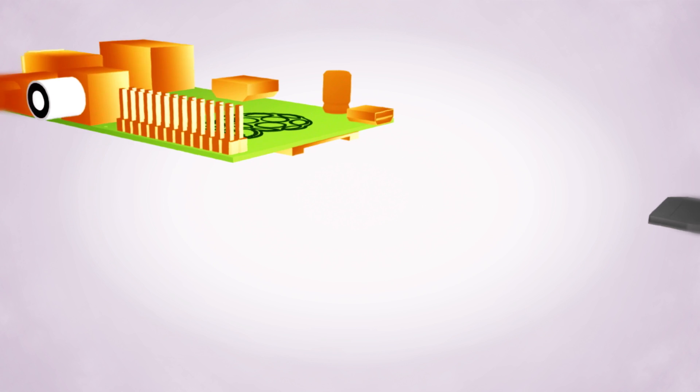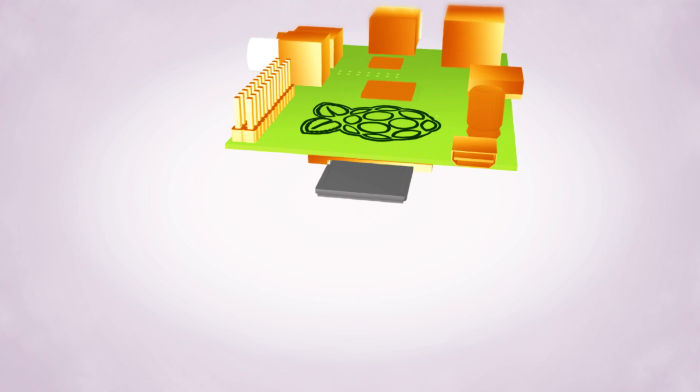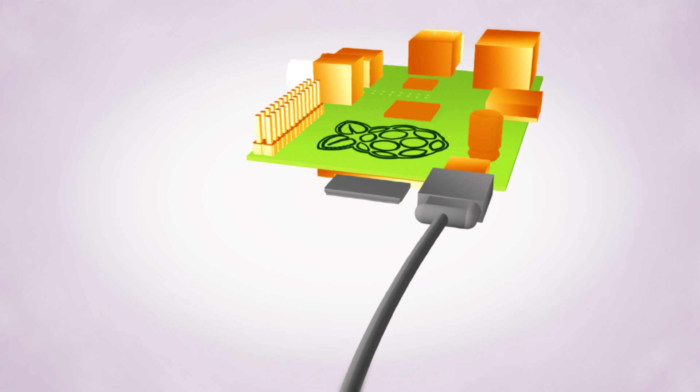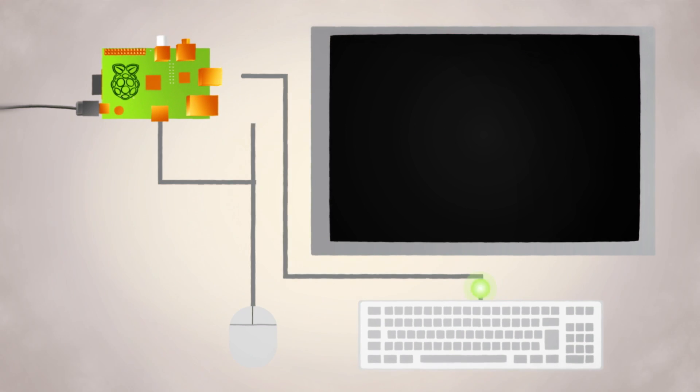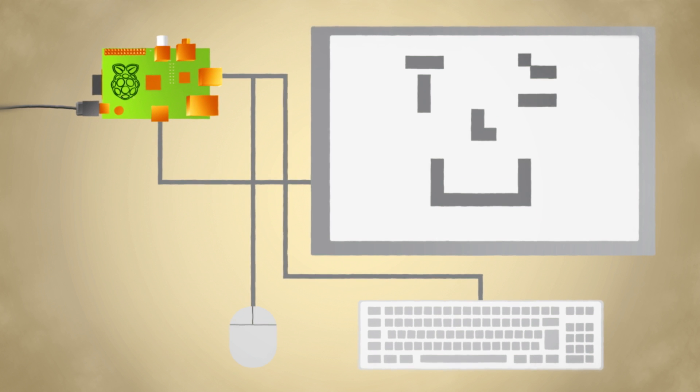It runs Linux, a free operating system from an SD card, just like the one in your digital camera, and it's powered by a USB phone charger. You just plug in a mouse and a keyboard, connect it to a TV or monitor, and you're ready to go.